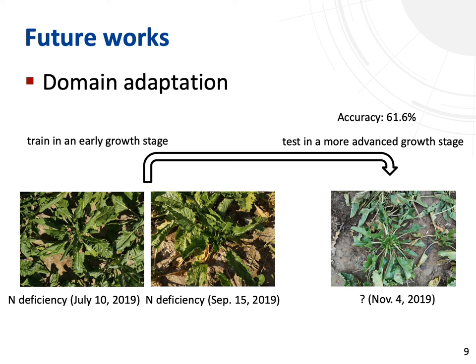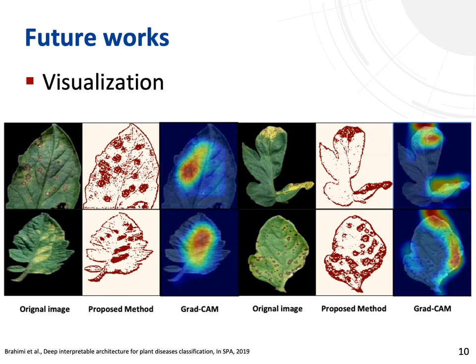However, when we train and test our model in different growth stages, the classification accuracy reduced to about 61%. In the future, domain adaptation should be adopted when the training set and test set are sampled from different distributions and when labels are not available in the test set. Better visualization techniques can also be developed for better understanding of the correlation among the input features and nutrient deficiency.